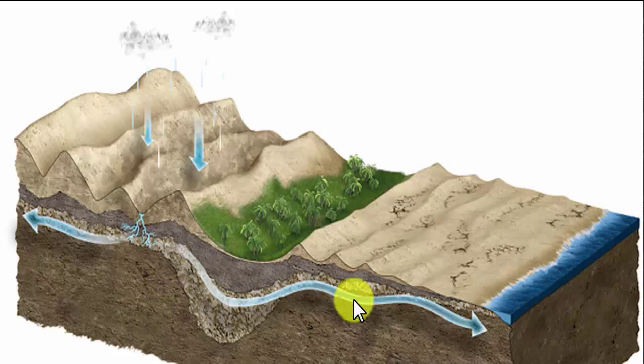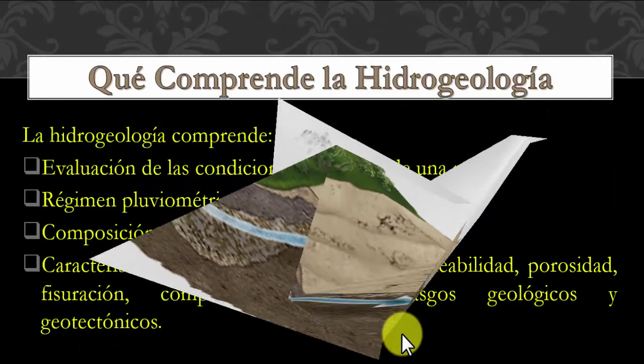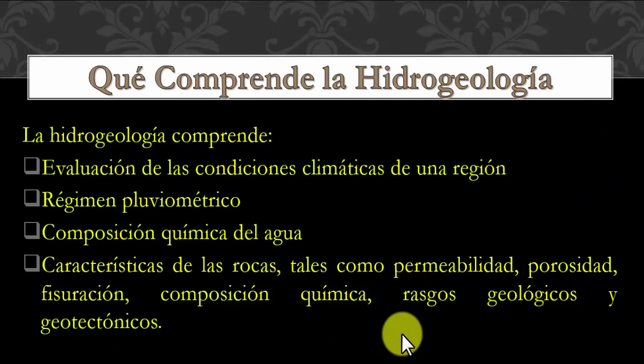¿Qué comprende la hidrogeología como ciencia? Comprende la evaluación de las condiciones climáticas de una región, el régimen pluviométrico —cantidad de agua o nieve que cae en esa región—, la composición química del agua, y las características de las rocas tales como la permeabilidad, la porosidad, la fisuración, composición química, rasgos geológicos y geotécnicos.